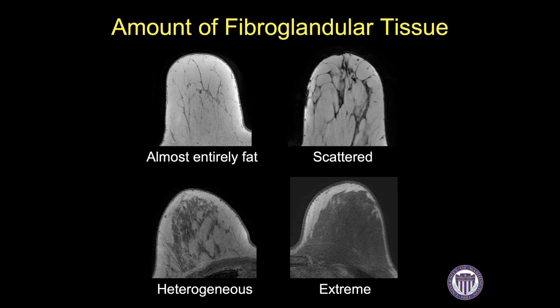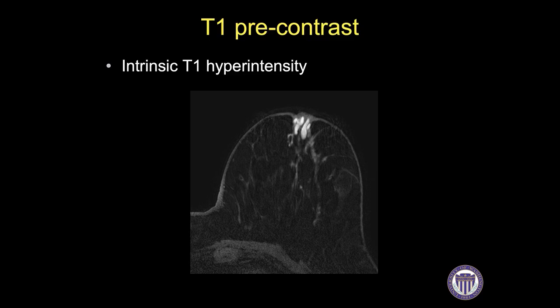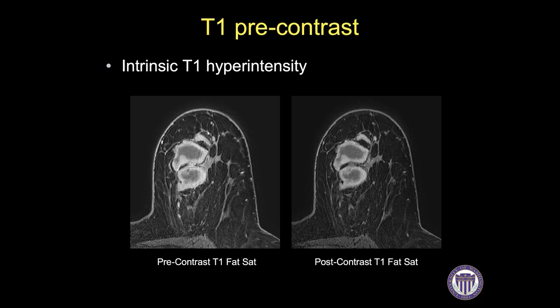On the T1 non-fat saturated images, I also assess the amount of fibroglandular tissue, similar to breast density on mammography. There are four categories: almost entirely fat, scattered fibroglandular tissue, heterogeneous fibroglandular tissue, and extreme fibroglandular tissue. I then quickly look at the T1 pre-contrast fat-saturated images for things that are intrinsically T1 hyperintense, such as proteinaceous fluid or blood in dilated ducts, or a post-biopsy hematoma — so I don't misinterpret these as enhancing lesions.